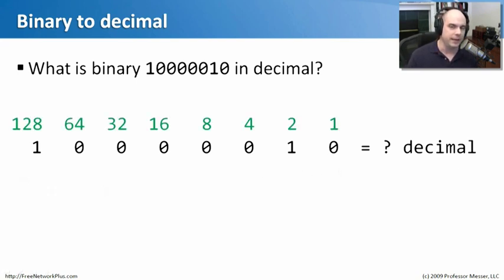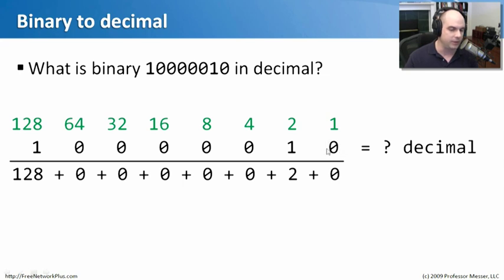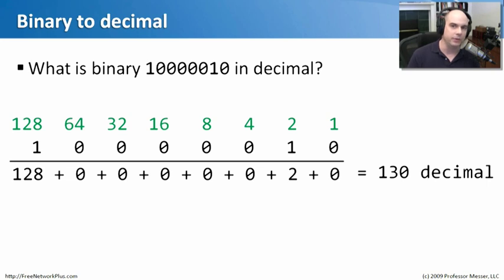Right on top of that binary number, put the conversion chart: 1, 2, 4, 8, 16, 32, 64, and 128, placing each value directly over the corresponding bit. Then draw a line underneath. Every place that has a 1, bring that number down; every place that has a 0, don't bring any number down. There is a 1 next to the 2, so we bring down 2. All the rest are zeros until the 128 position, so we bring down 128. Add them all up: 128 plus 2 equals 130. You're doing binary math — it's really that simple.